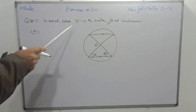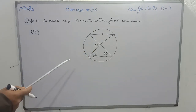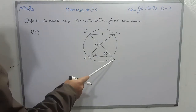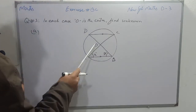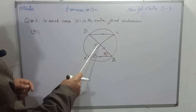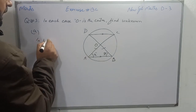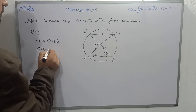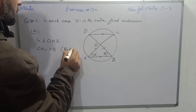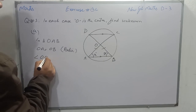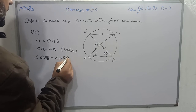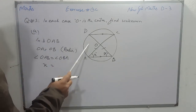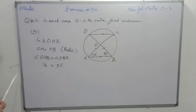Students, question number 3 from the same exercise: in each case, O is the center of the circle — find the value of the unknown. I will name the points A, B, C, and D. In triangle OAB, OA and OB are congruent because they are radii of the same circle. So angle OAB equals angle OBA because opposite angles are to congruent sides. Angle OAB is X and angle OBA is 50 degrees, so the value of X is 50 degrees.